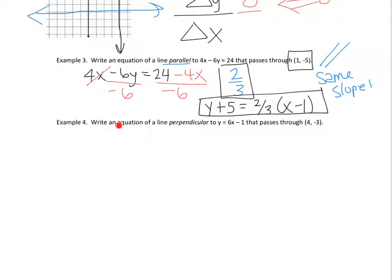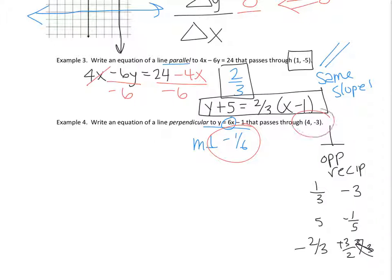In example 4, write an equation of a line perpendicular. So perpendicular was this symbol. And perpendicular slopes are opposite reciprocals. So I'll do some examples. So if you have 1 third, the opposite and reciprocal of 1 third is negative 3. If you have 5, it's negative 1 fifth. I'm making it the reciprocal, but I'm also changing it to its opposite. So negative 2 thirds turns into positive 3 halves. So if I want to write an equation of a line perpendicular to this line, this line, the slope is 6, so perpendicular 6 is negative 1 sixth. So again, I'm going to use point-slope form. So it's going to be Y plus 3 equals negative 1 sixth, because that's my slope, times X minus 4.